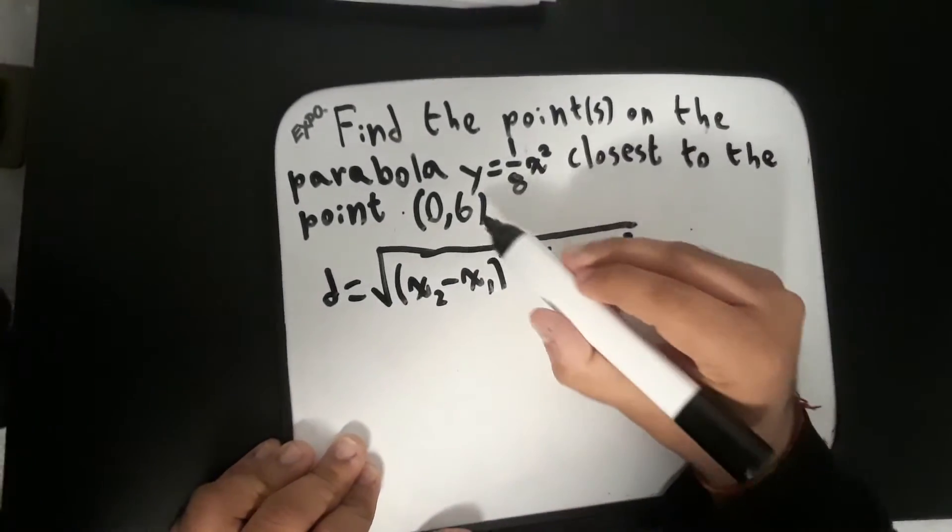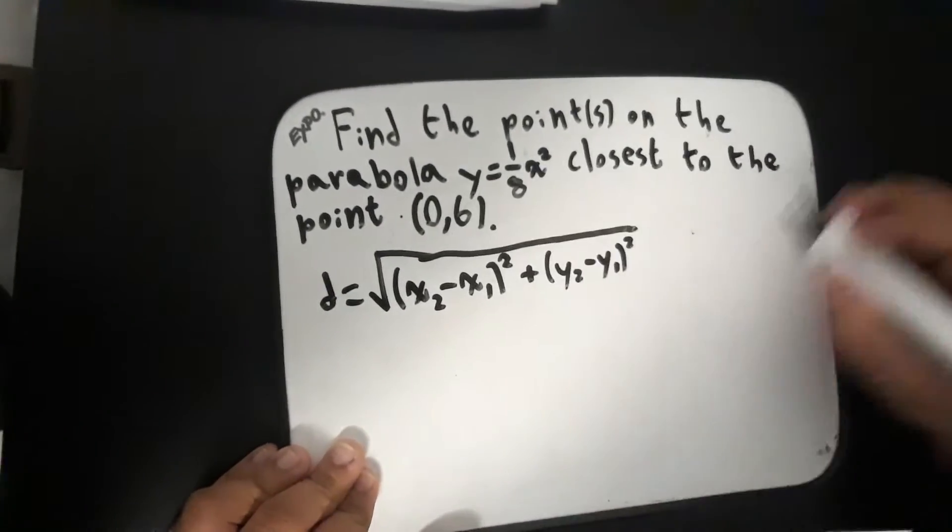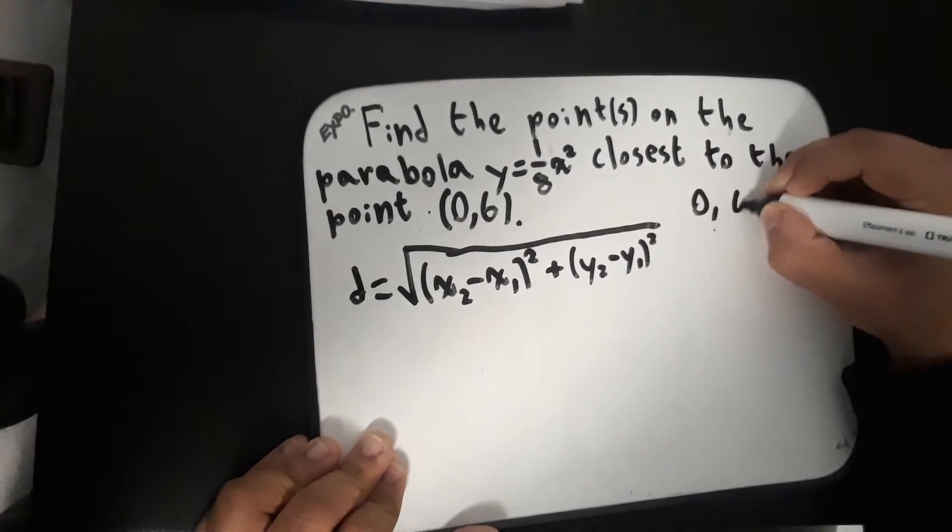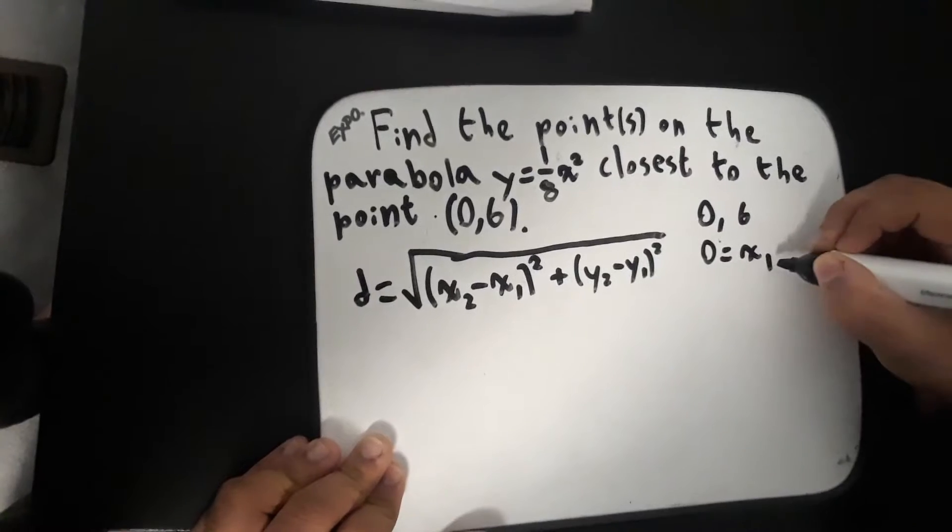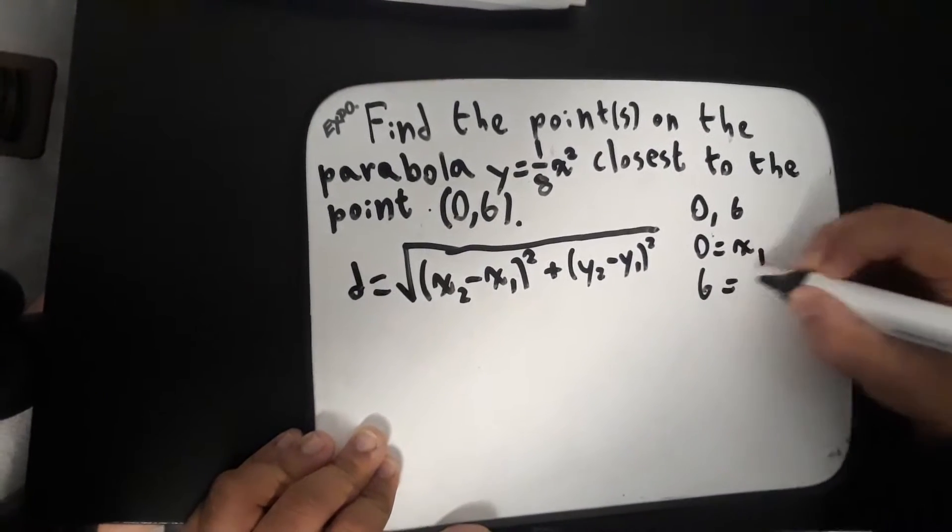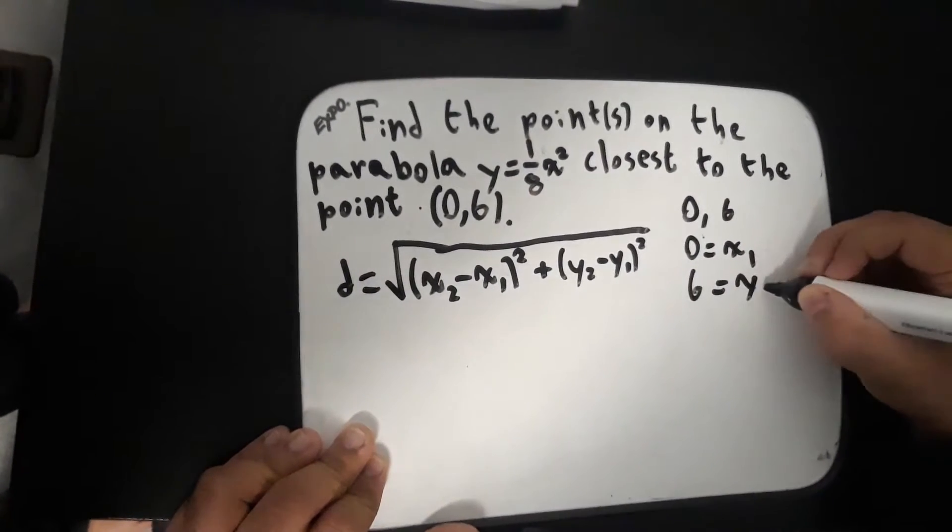We have one point, of course, this (0,6). The 0 can be our x1, and the 6 can be our y1.